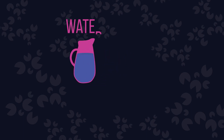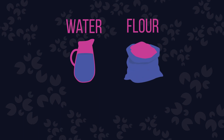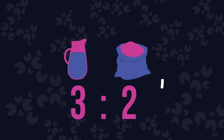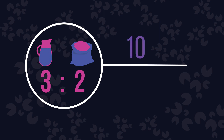Let's say that we now want to bake a loaf of bread. We first need to make the mix. This needs to be three parts water and two parts flour. We can see that this is a ratio of three to two, with five parts altogether. If our total mix weighed 1000 grams, we can find out how much of each ingredient we require.